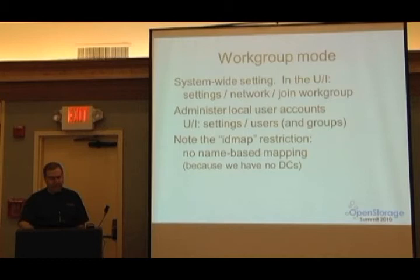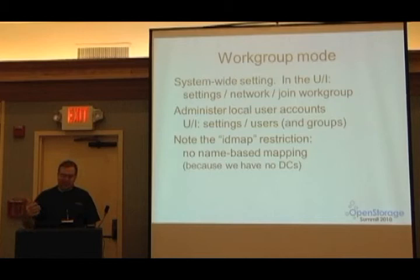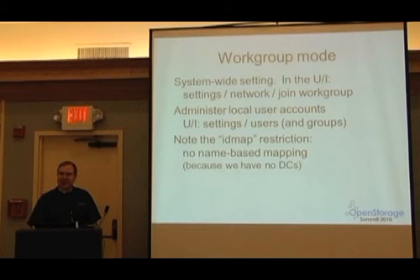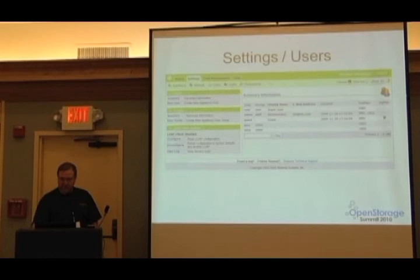The ID map restriction has been somewhat of a surprise for people. It does relate ephemeral UIDs and GIDs to security descriptors, but it can't do it with the magic of looking up names in a domain because we don't have a DC to ask. We don't know anything about SIDs or what names might be associated with SIDs in workgroup mode. If you ask it to try, it will make futile efforts and spew your log with complaints about how hard a time it's having finding names. I think that's actually fixed in later code we're integrating.